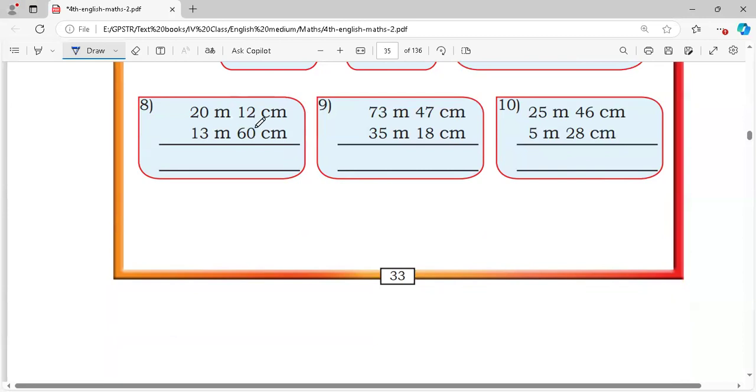Problem 2: 0, 2 plus 0 is 2, 1 plus 6 is 7, 0 plus 3 is 3, 2 plus 1 is 3, equals 33 meter 72 centimeter.